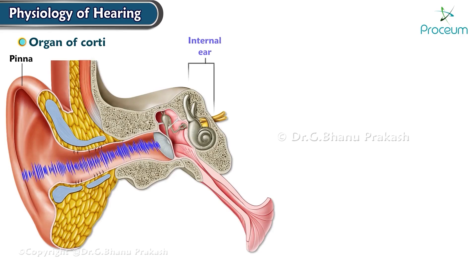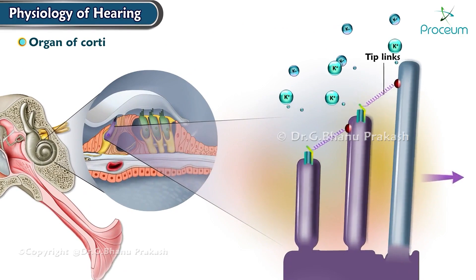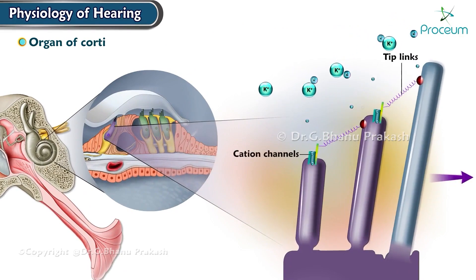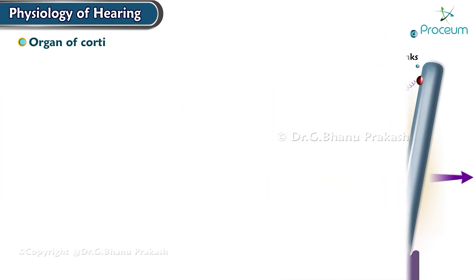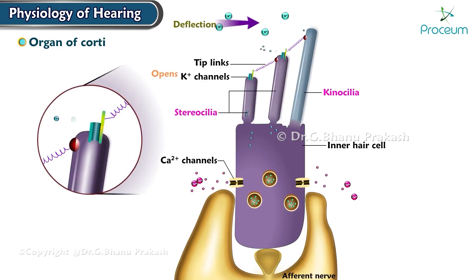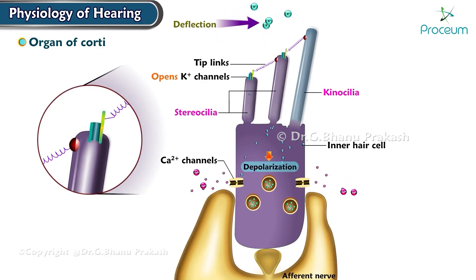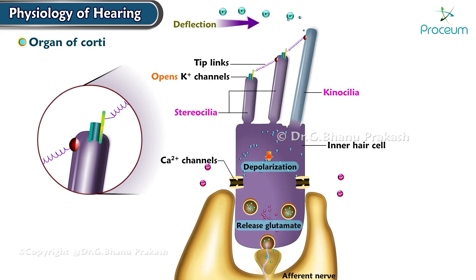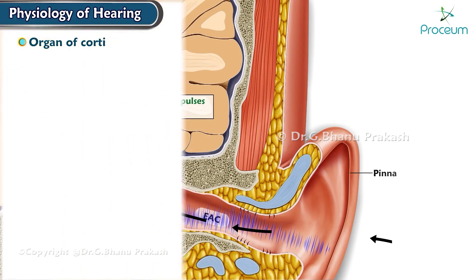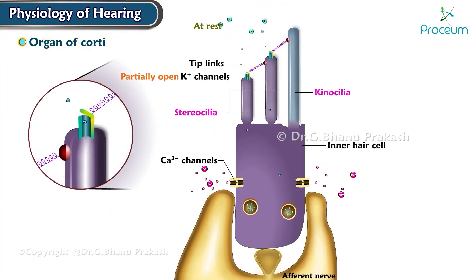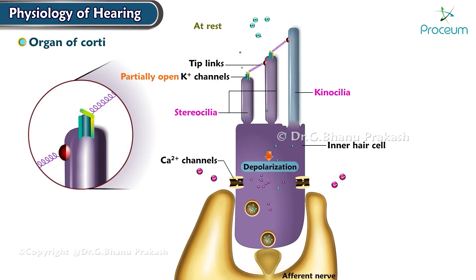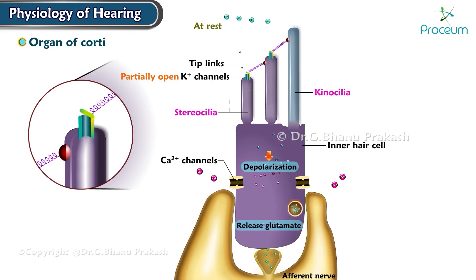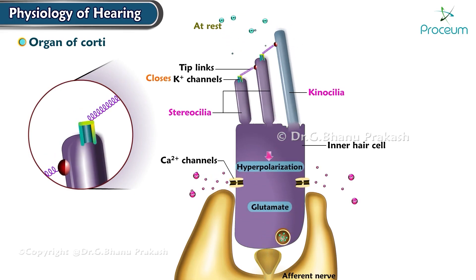When sound waves enter the inner ear and cause the stereocilia to bend, the tip links stretch and pull on the mechanically sensitive cation channels, opening them and allowing ions to flow into the hair cell. The flexion of the stereocilia toward the kinocilium opens the potassium channels, depolarizing the inner hair cell and causing the influx of calcium that stimulates the release of glutamate, which then stimulates the afferent neurons to transmit neural impulses to the auditory cortex. At rest, the potassium channels are partially open. Deflection of stereocilia toward the shortest stereocilia closes the potassium channels and inhibits signal transmission by the afferent neurons.